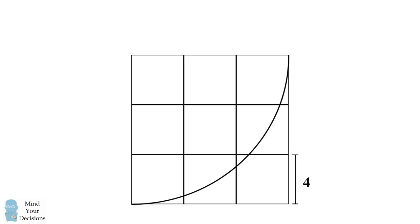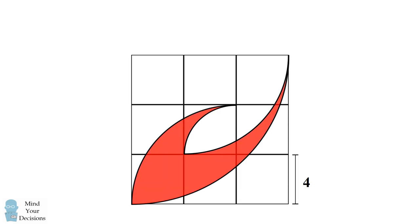Draw an arc of one quarter circle. Then draw another arc of another quarter circle. Draw a third arc of another quarter circle and finally draw a fourth arc of a quarter circle. These arcs bound a region.